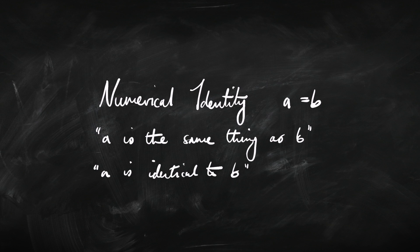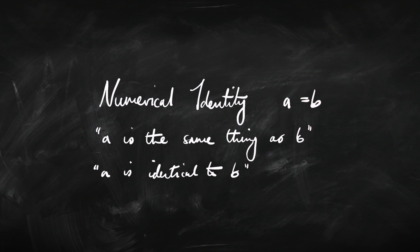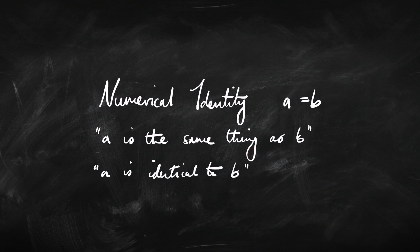We are going to write identity like this, with this identity symbol, like equality as you would have seen in mathematics. And we're going to read it as 'A is the same thing as B,' or 'A is identical to B.'